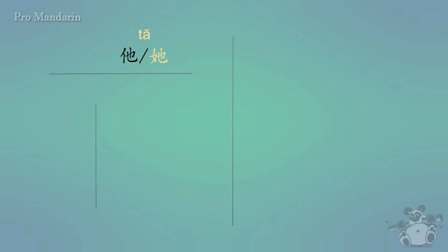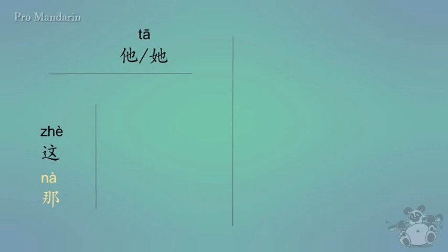Over here on the left we have zhè, which has a few different meanings — it means this, these, or here. But in this case we're just going to mean this. And then nà, which means that, those, or there. But in this case we're just going to use it to mean that. And I'll show you how that works in just a second.